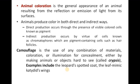Every organism has pigments in their body. Sometimes they have more pigments, sometimes less, or sometimes scattered pigments all over the body, which makes the colour of the organism.